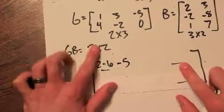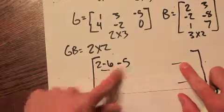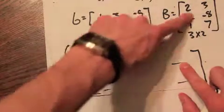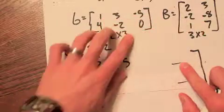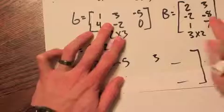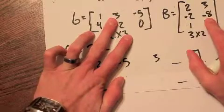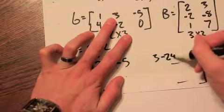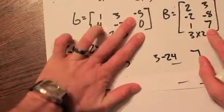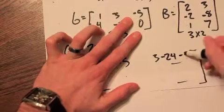Moving over, this is still the first row, but now we're in the second column. So we get first row, second column. So 1 times 3 is 3, plus 3 times negative 8, which is negative 24, plus negative 5 times 7, which is negative 35.